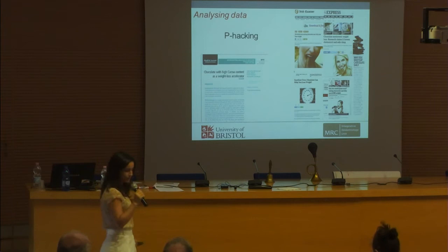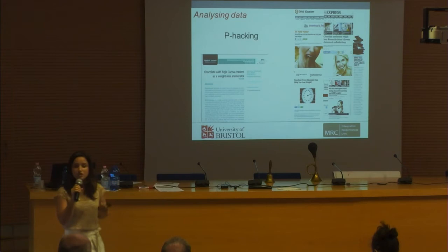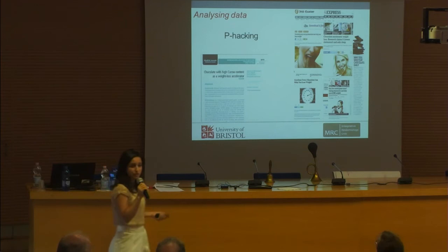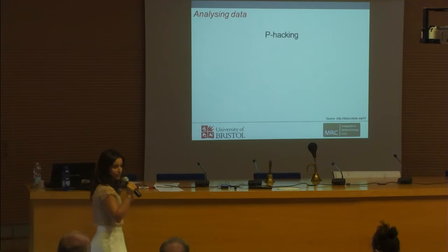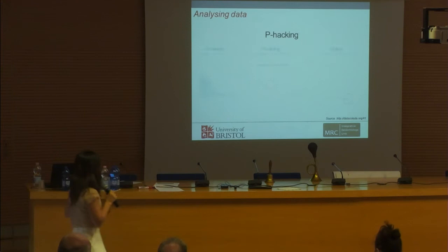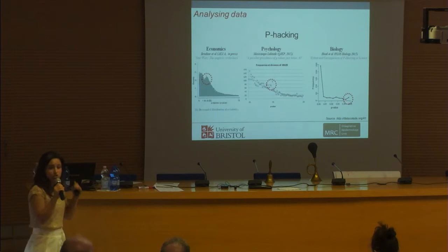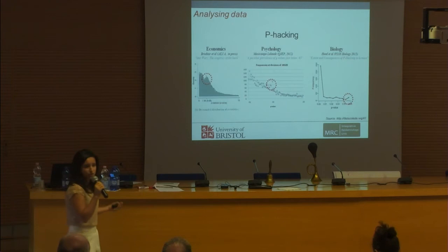You might think this is an isolated case — the journalist was just challenging the system. However, many researchers have analyzed the distribution of p-values across many different fields and found a very common pattern: an unusually high prevalence of p-values just below the conventional significance level of 0.05. This very unnatural distribution is a strong indication that researchers are doing p-hacking with their data.